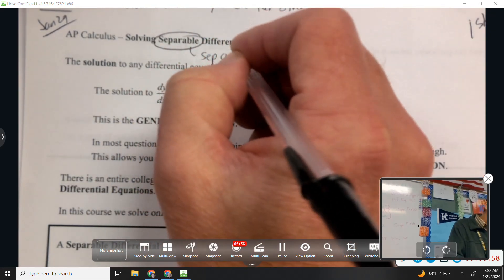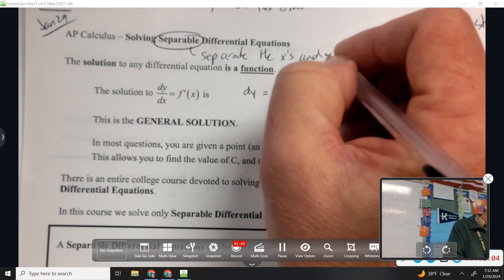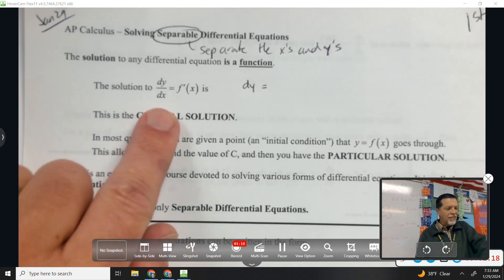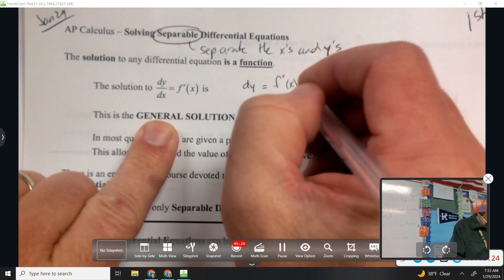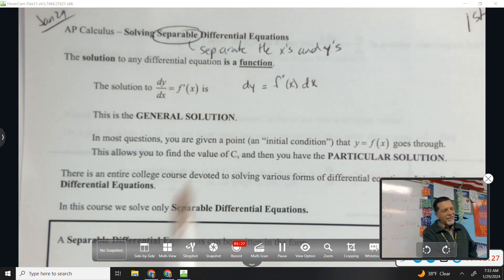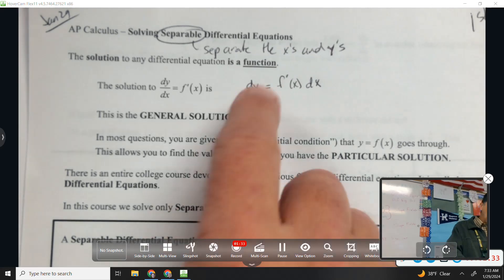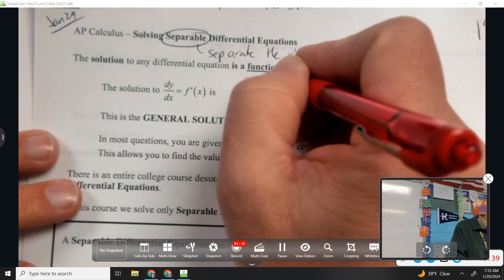When we say separable, we're separating the x's and y's. We're going to do something that's a little bit fishy but it looks fine. We can disconnect that dx from the dy. I'm going to multiply both sides by dx. Again, dy/dx is not really a fraction but we kind of treat it like one. Now we've separated the y stuff and the x stuff, and then we can integrate both sides.